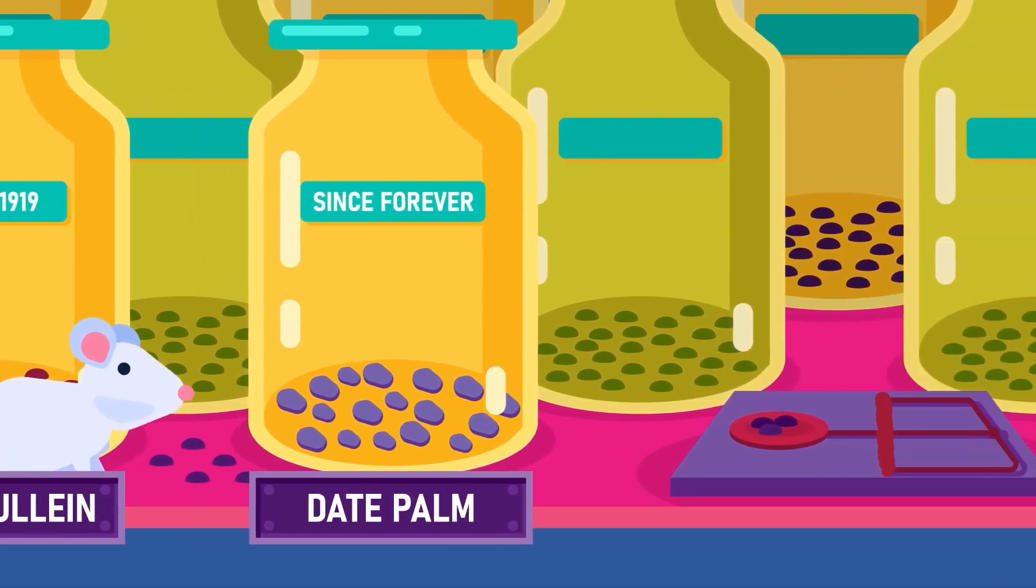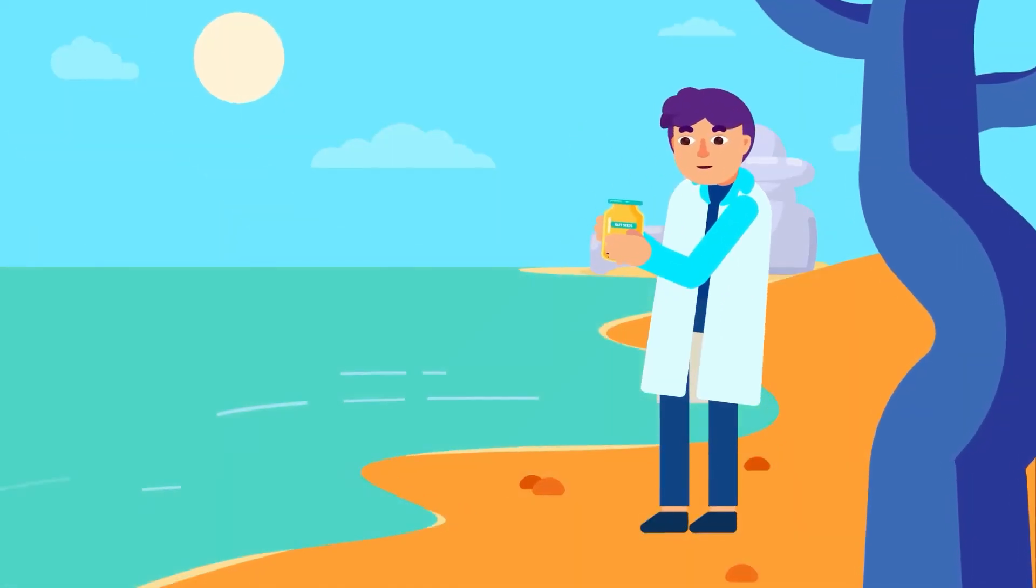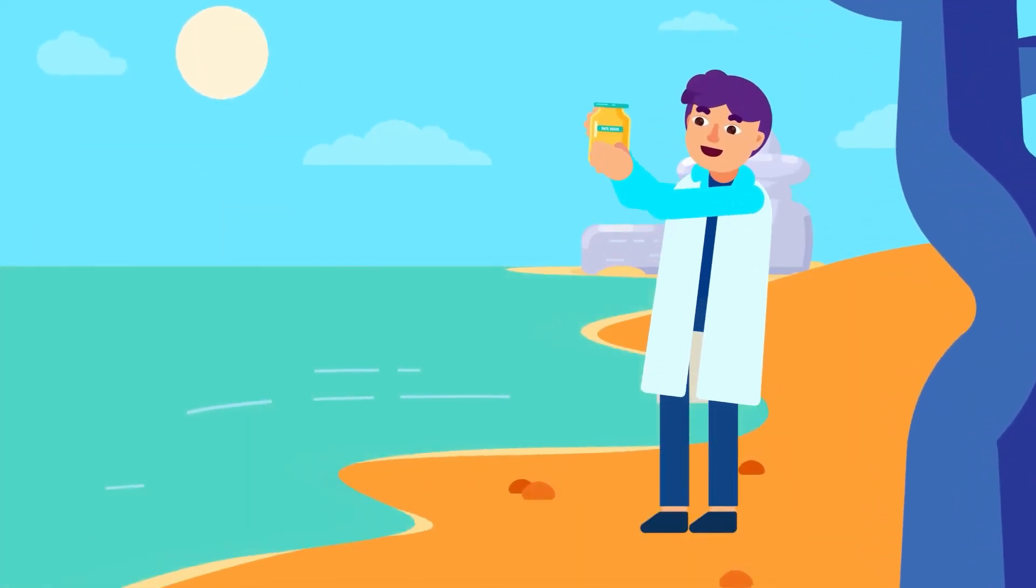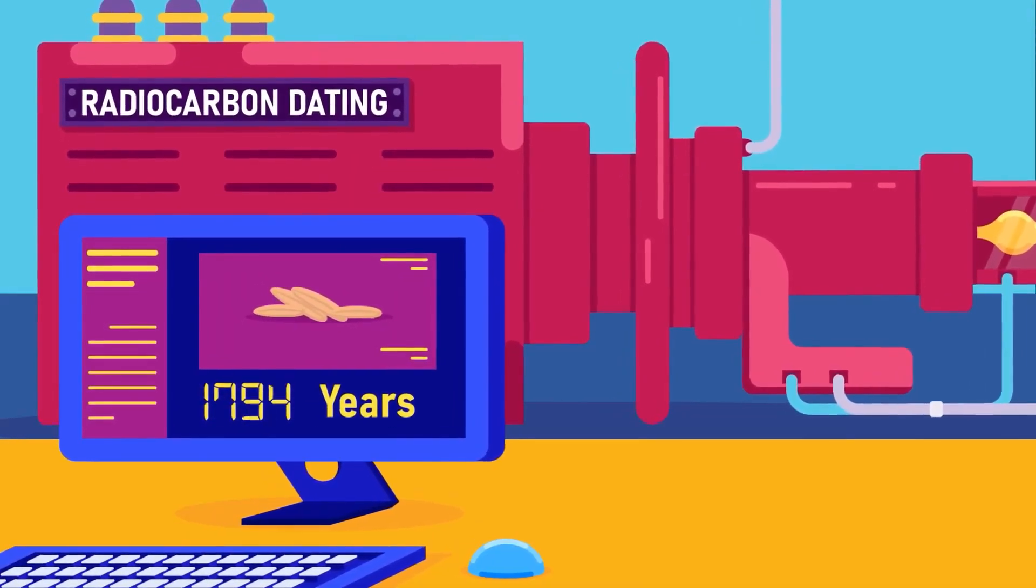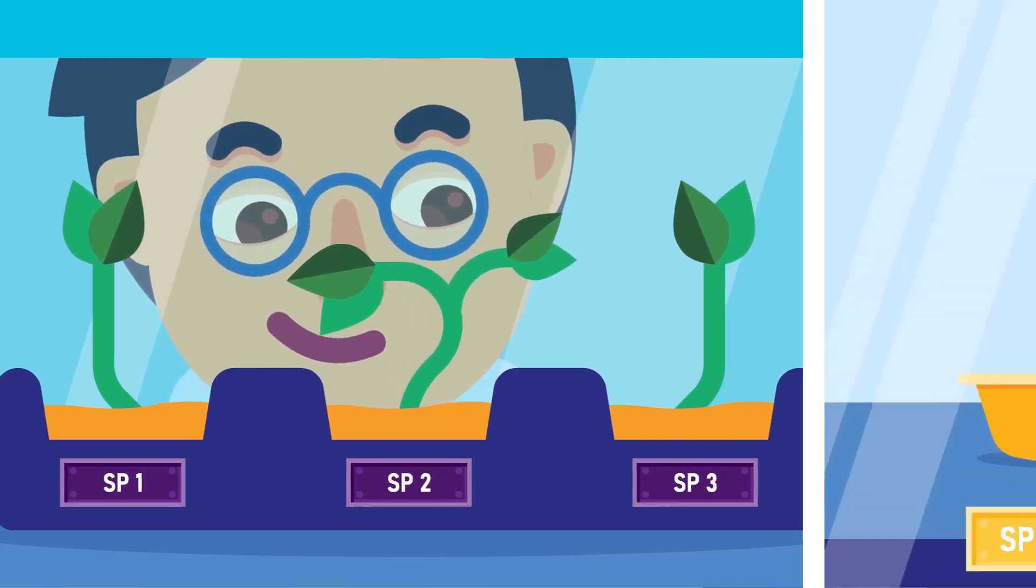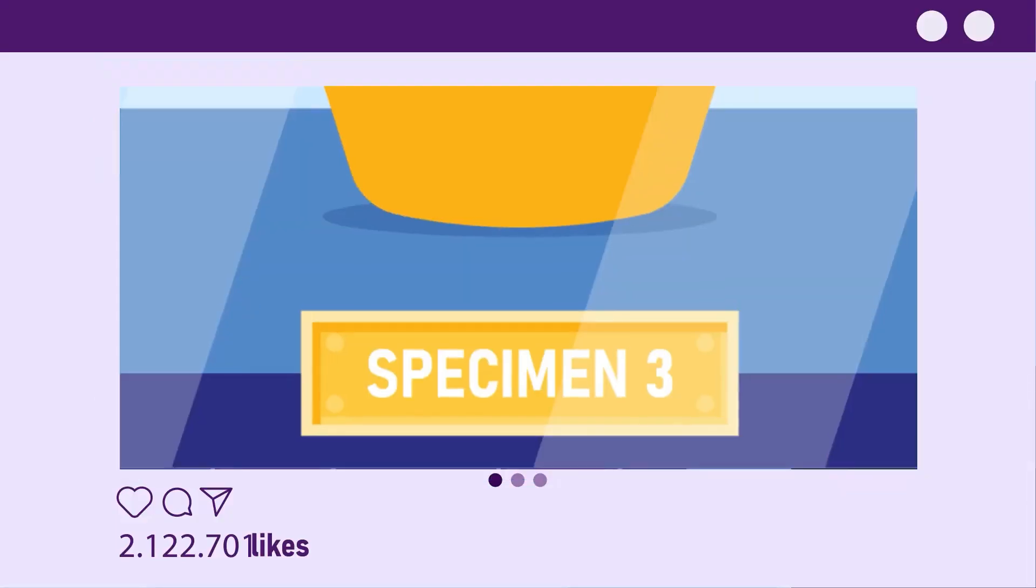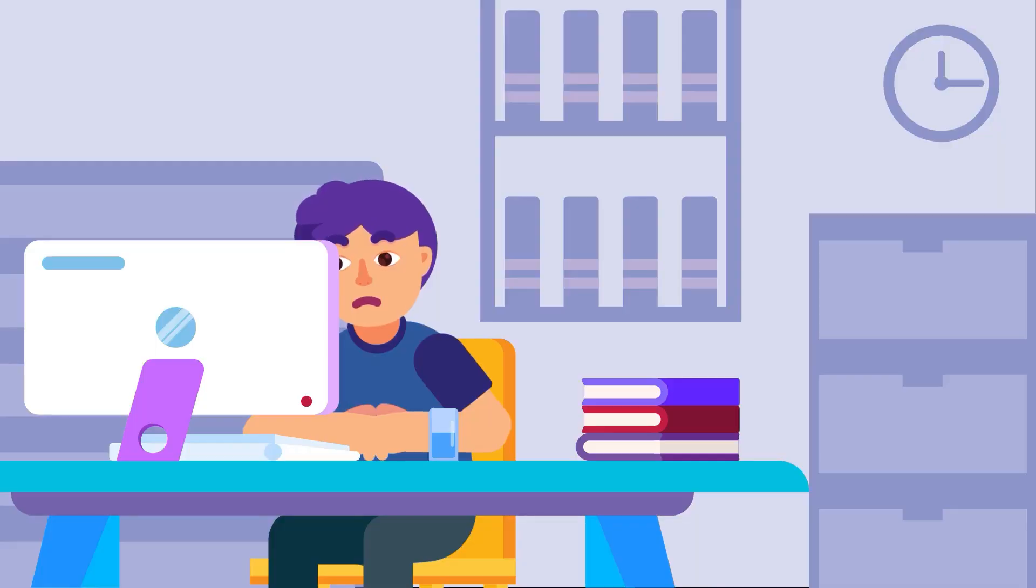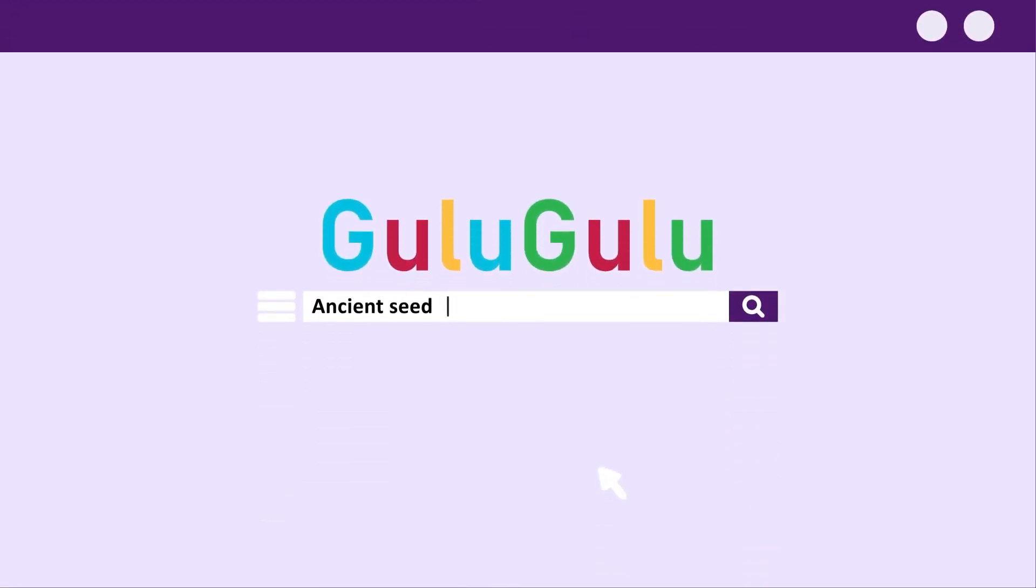However, the record-breaking number may belong to the date palm tree. Seeds from this plant were discovered near the Dead Sea, which was at least 2,000 years old. Imagine 2,000 years! Several of these seeds germinated within 48 hours of planting, and one of the plants produced flowers within a year of planting. Fascinating, isn't it? Do you know any other prehistoric seeds that can still germinate? Let us know in the comments below.